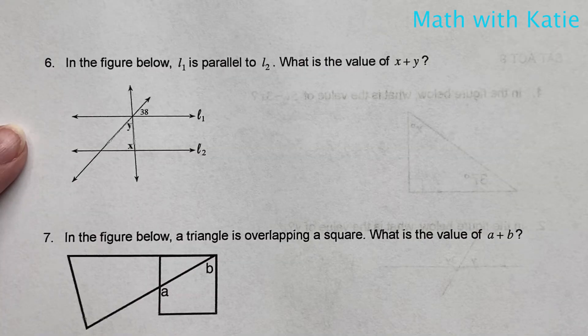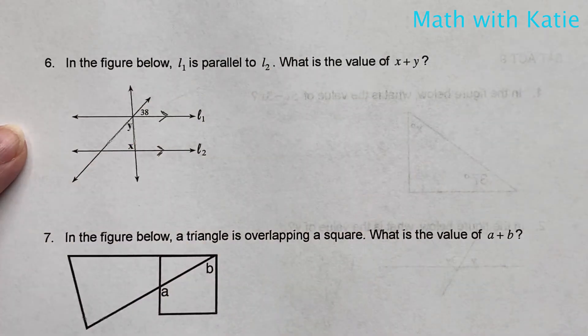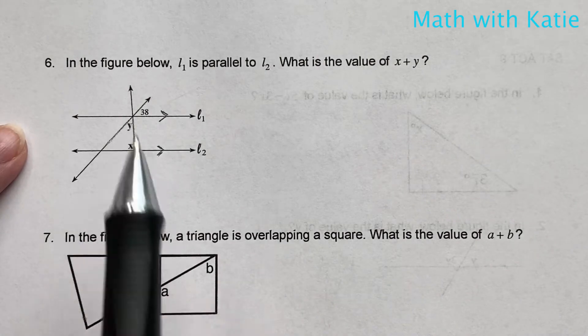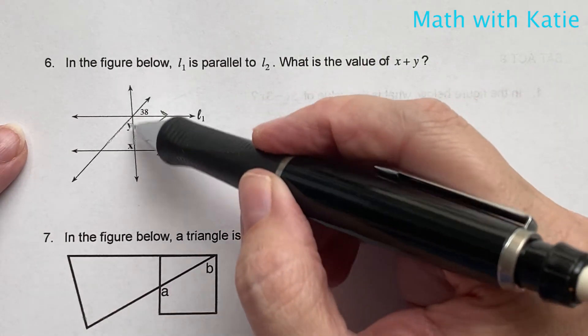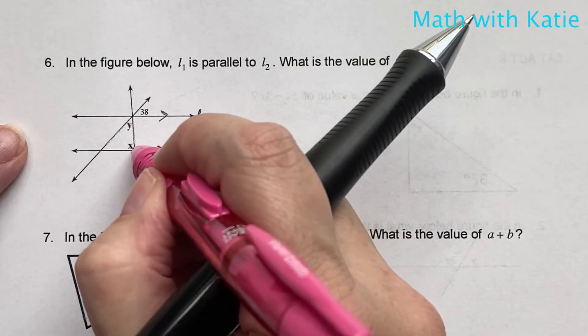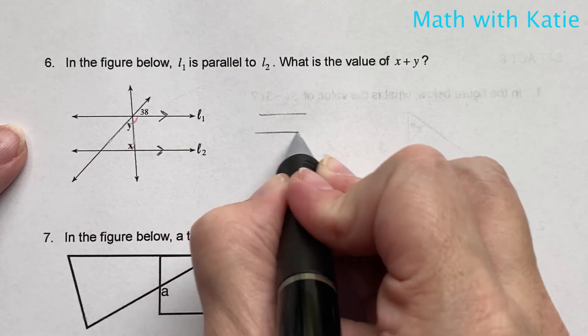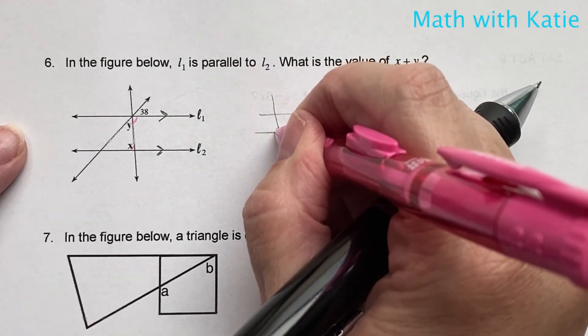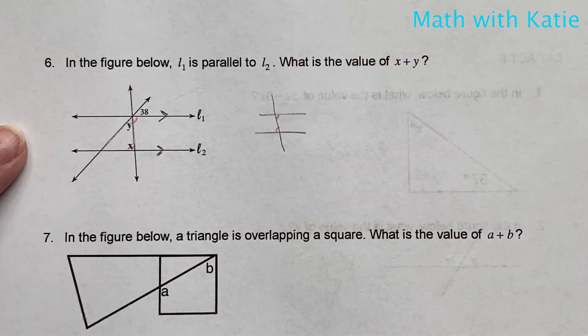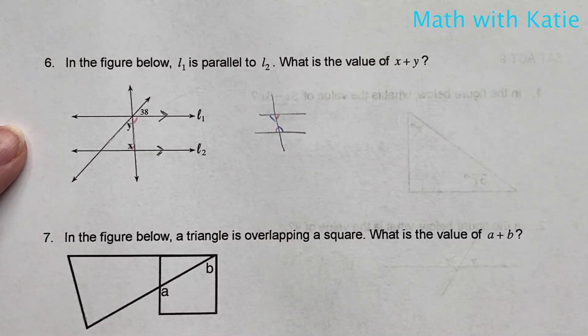In the figure below, L1 is parallel to L2. What is the value of x minus y? If we've got two parallel lines cut by a transversal, we know that this angle is equal to this angle, right? Because if we have two parallel lines cut by a transversal, this angle is equal to this angle. Also, this angle is equal to this angle. Alternate interior angles.